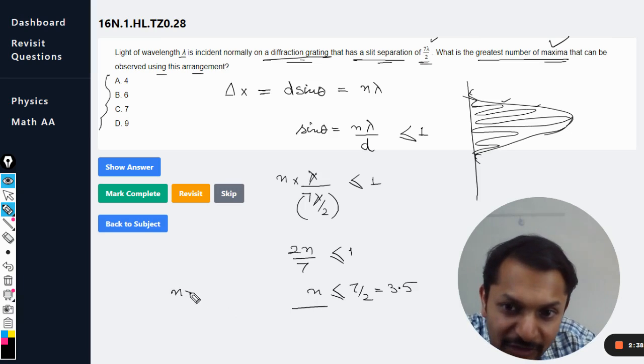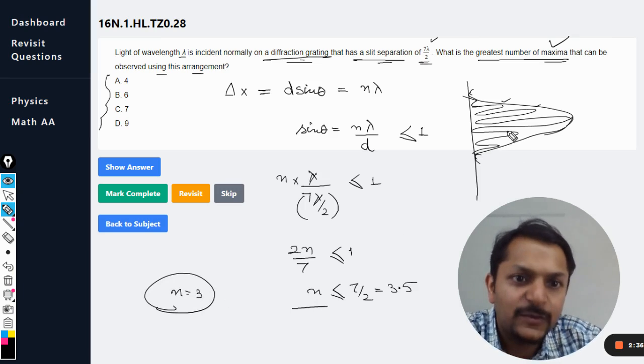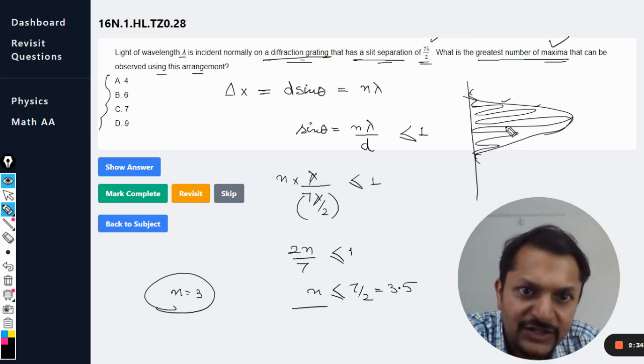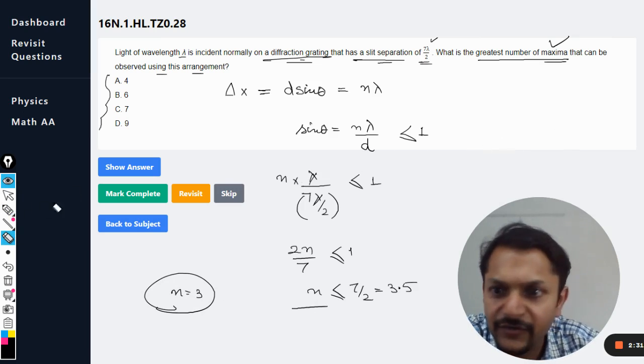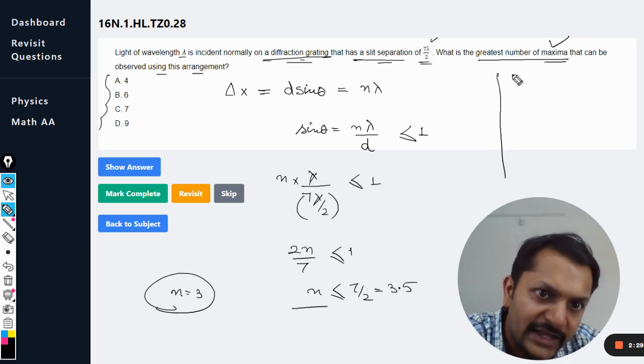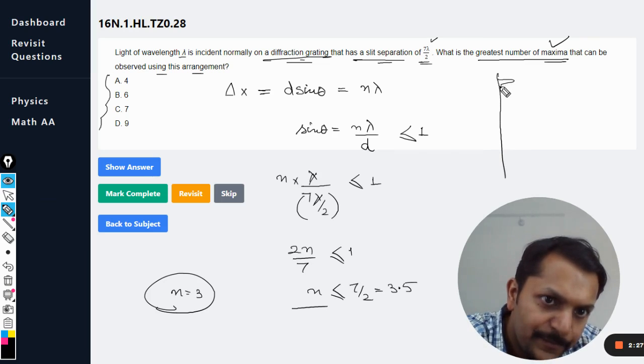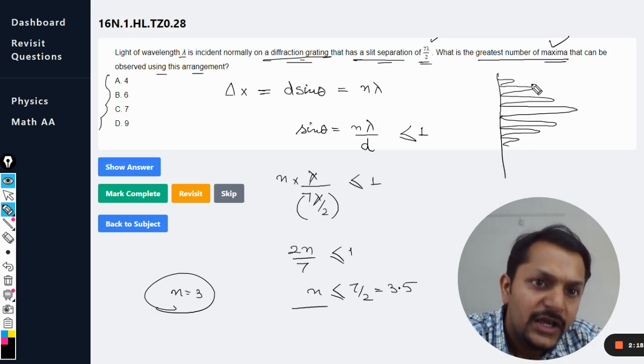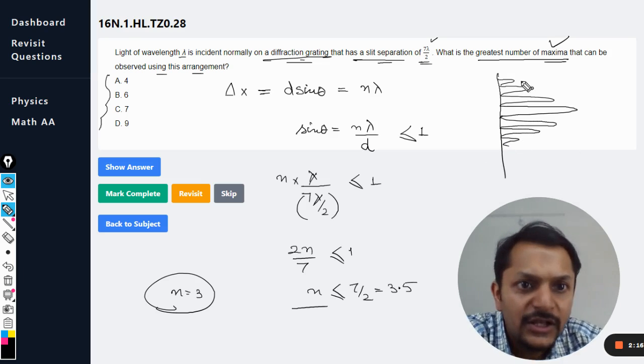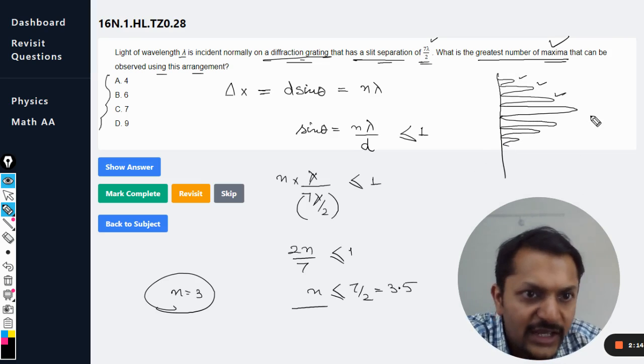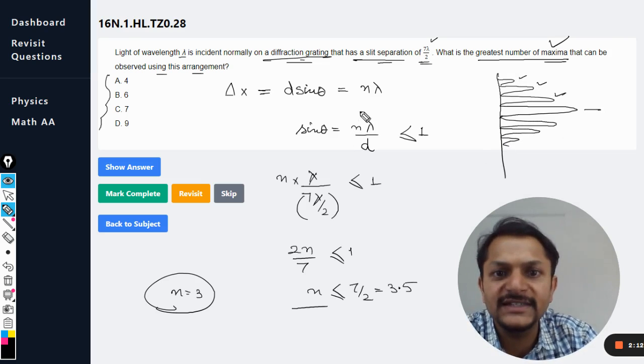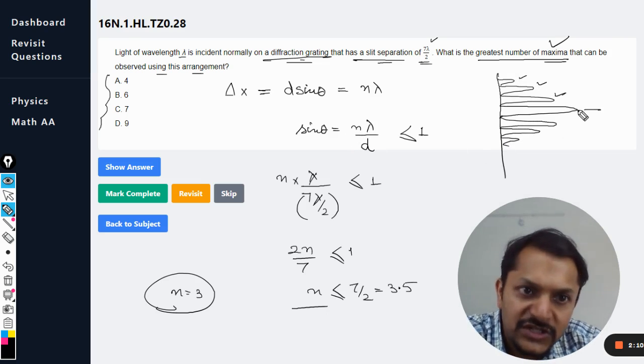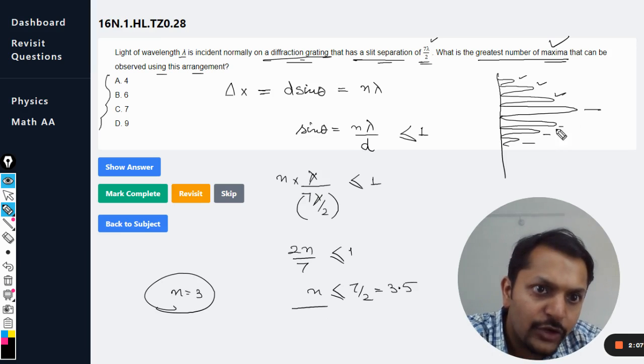N is coming out to be equal to 3. Now what does this mean? This means that apart from the central maxima, there are three other maximas that are visible. So the pattern will look like 1, 2, 3, central maxima, 1, 2, 3. This is the pattern that is visible. This is one extra and 3 here more, so overall it is 6 plus 1, which is 7. So 7 maximas will be visible.